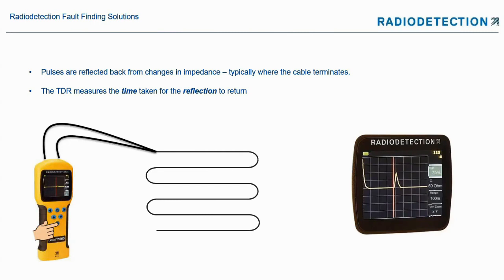Much like radar, the TDR measures the time taken for the reflection to return and then halves it. One of the things we need to know is the speed at which the signal is travelling down the cable — this is called the propagation velocity or velocity of propagation. This can normally be acquired from cable manufacturers. If not, we have an easy user guide for types of cable, or you can find a piece of cable of known length and calculate the velocity of propagation from that.